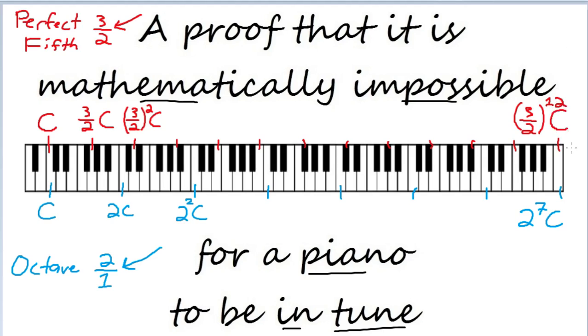Now, if the piano is going to be in tune, these two values better be the same, since they are referring to the same key. Let's see if that can be the case. So, assume, for a moment, that it is indeed the case that 2 to the 7th C is equal to 3 halves to the 12th power C.